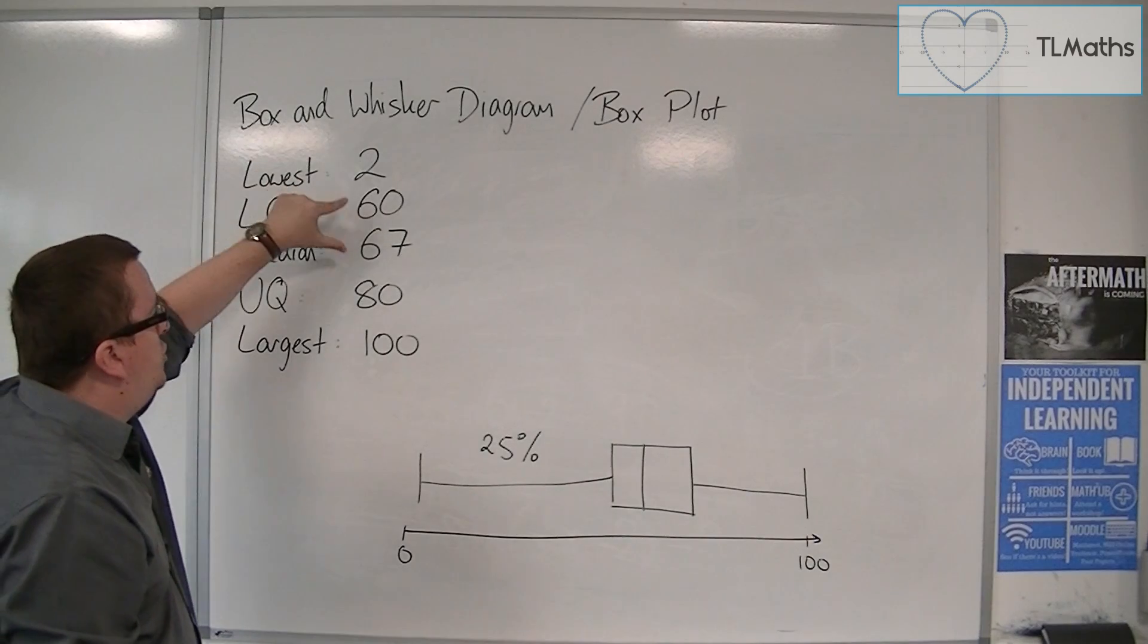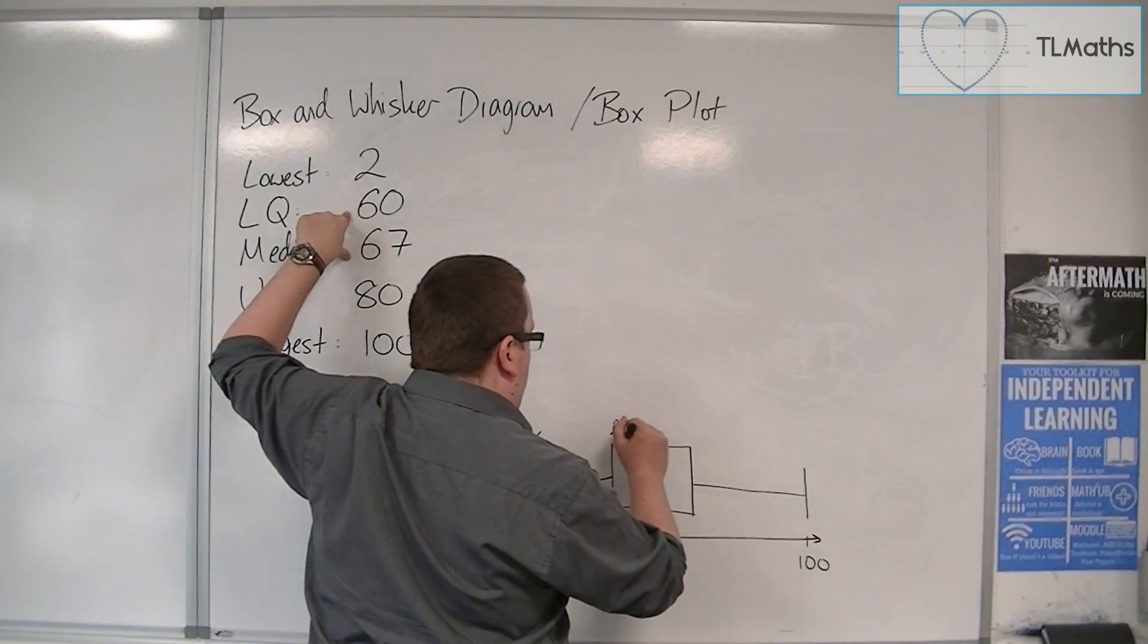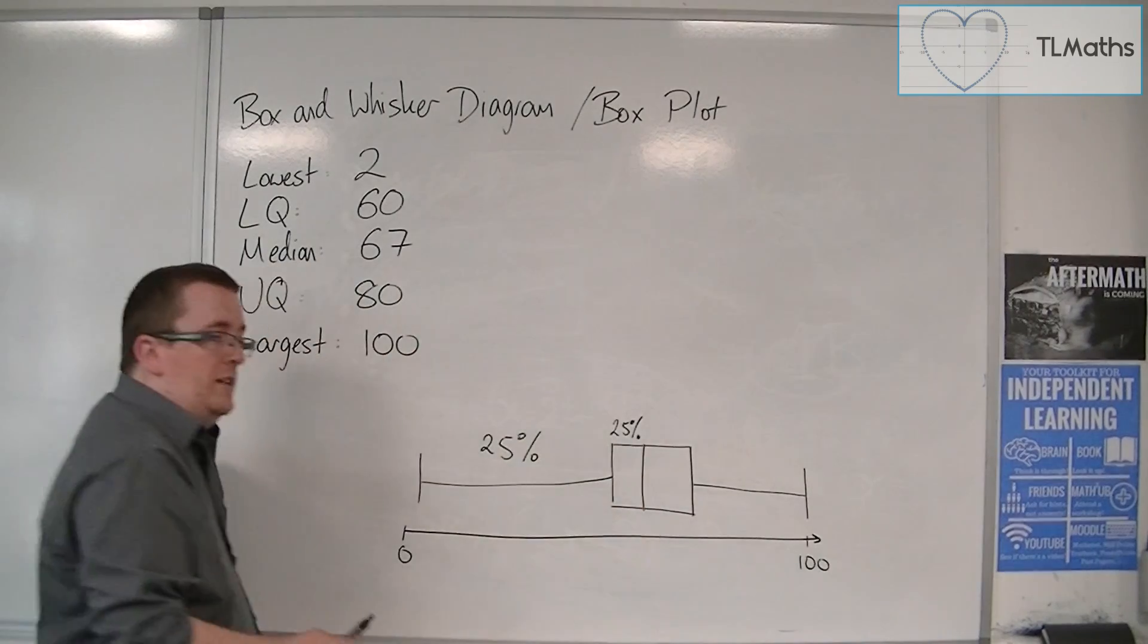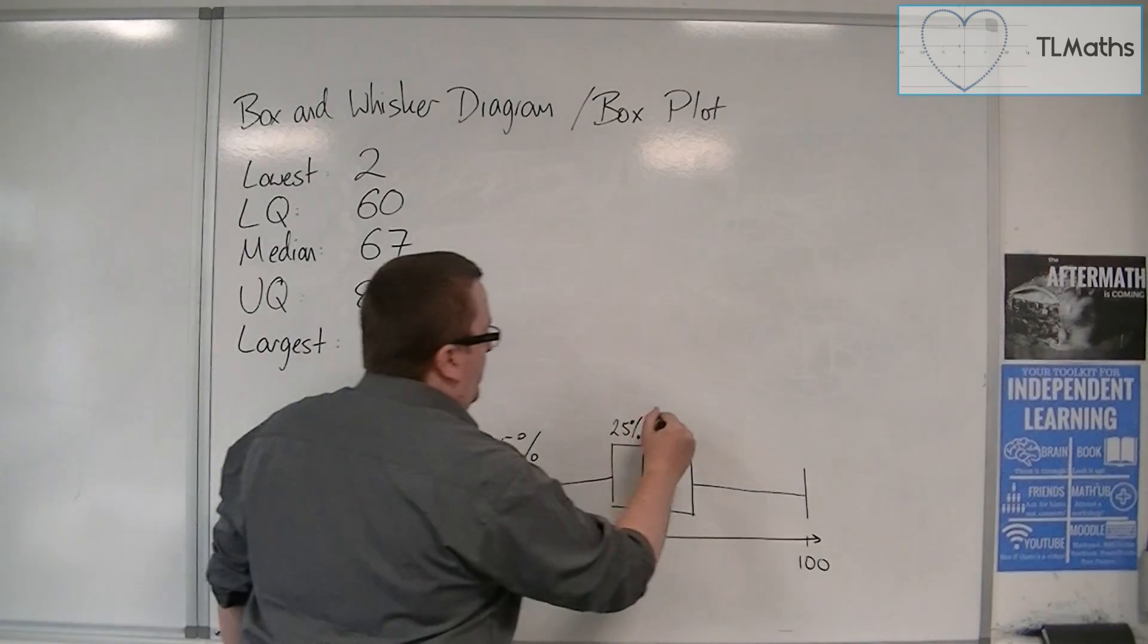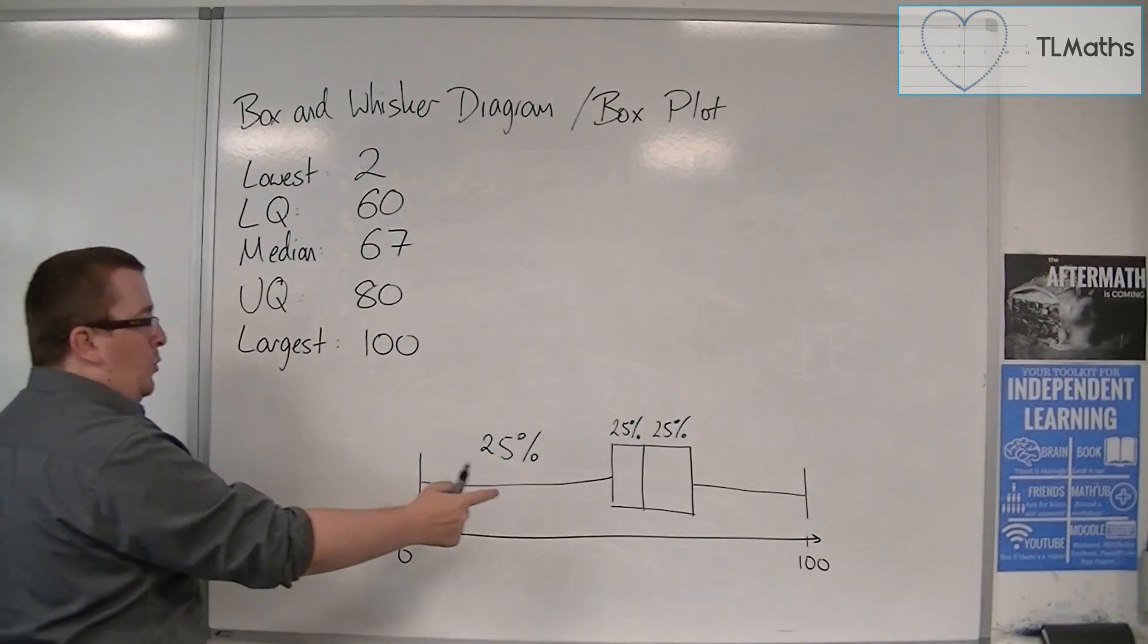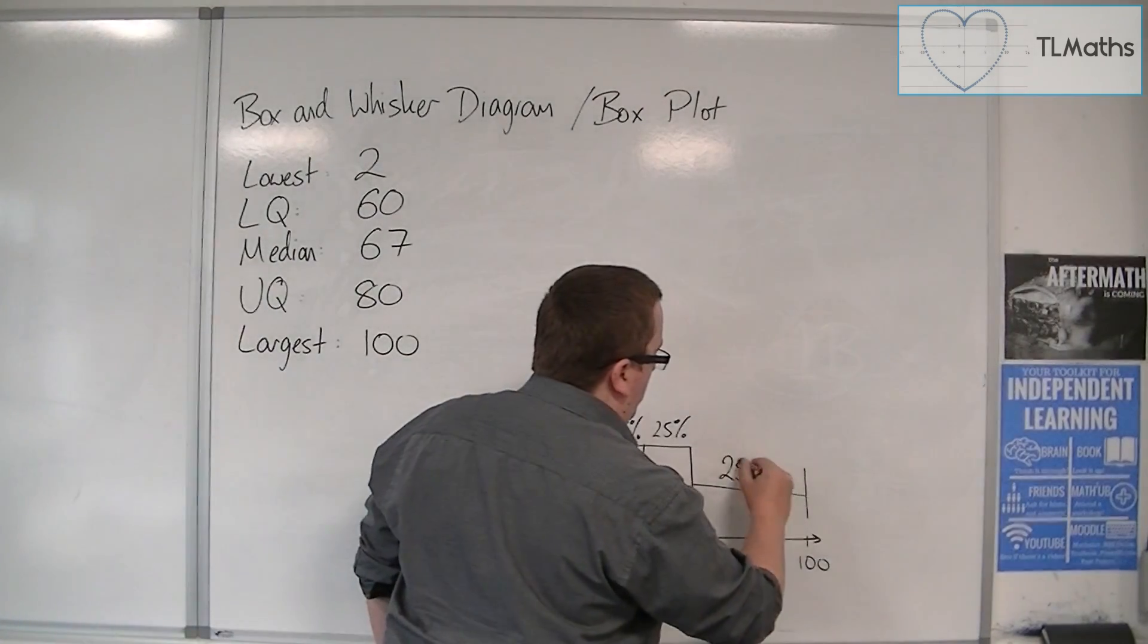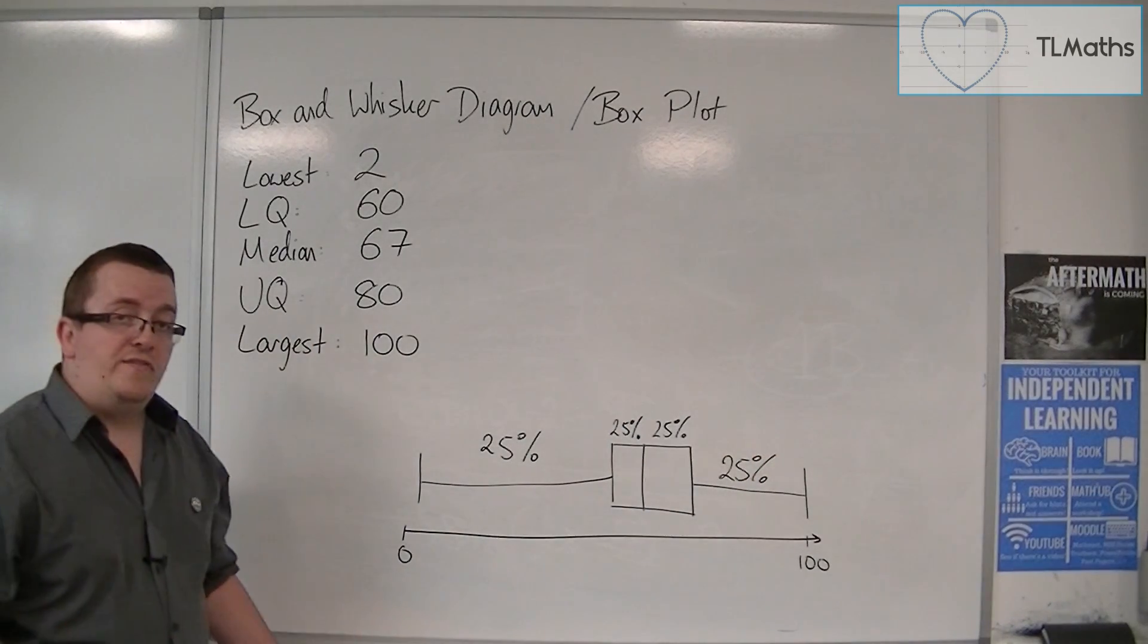The next quarter of the data is between 60 and 67. So you can see that 25%, the same amount of data that was there, is now compacted between 60 and 67. And another 25% is compacted between the median and the upper quartile, in that bit there. And so the final quarter is within this whisker here, between the upper quartile and the largest value.